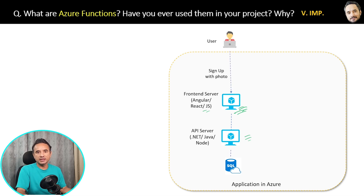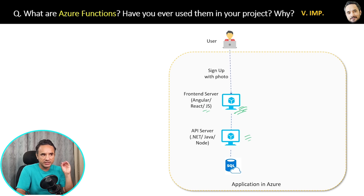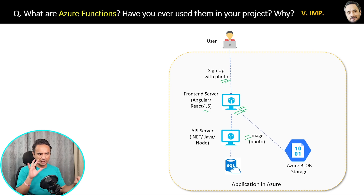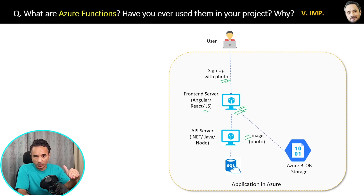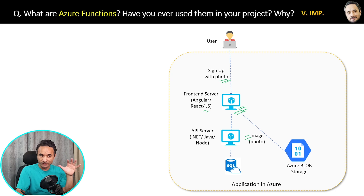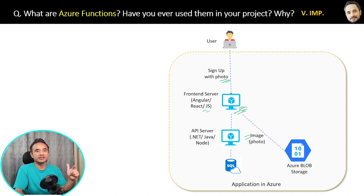Now there is a user signing up in your application. While signing up, the user uploads a photo or image document. That photo is stored in Azure Blob Storage — which is used for storing images in Azure. Now, the images the user is uploading may be very large, taking too much space inside your Azure Blob Storage. Because of those large images, your company's Azure billing cost will increase, since larger images need larger storage.